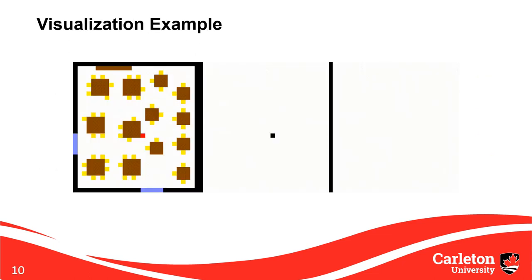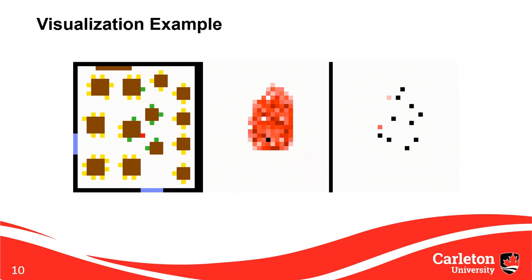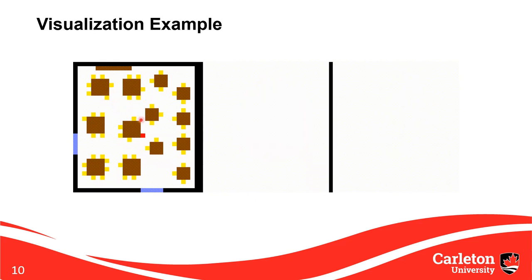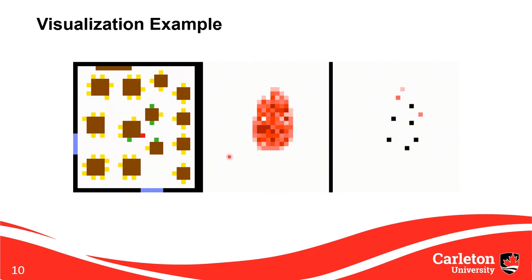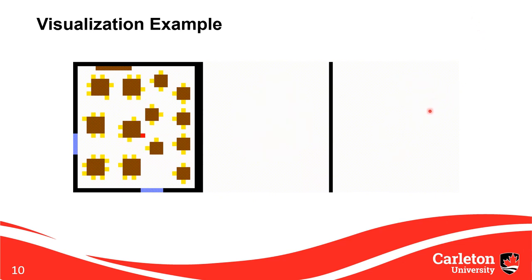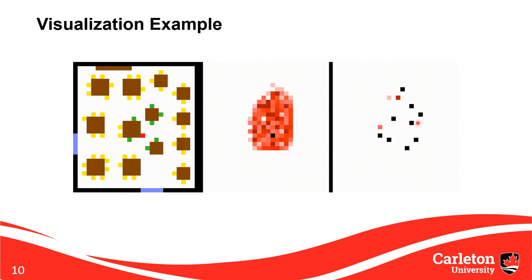Here is an example visualization of a completed simulation, sped up since the real-time simulation takes almost two hours. The left panel shows cell type, and yellow cells turn green over time indicating they have become infected. The middle panel shows the concentration of viral particles in the air — the darker the shade of red, the higher the concentration. On the right, we can see the concentration of inhaled particles by the receiver cells. As the simulation progresses, some receivers inhale a high number of viral particles and turn green when the count reaches a certain threshold.